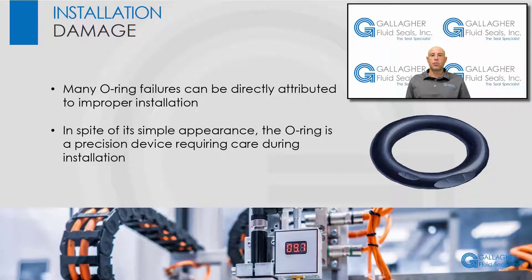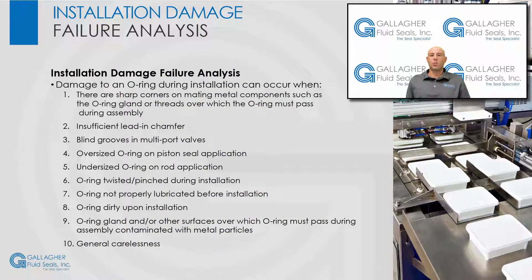Many O-ring failures can be directly attributed to improper installation. Despite its simple appearance, the O-ring is a precision device requiring care during installation. Damage to an O-ring during installation can occur when there are sharp corners on mating metal components such as the O-ring gland or threads over which the O-ring must pass during assembly, insufficient lead-in chamfer, blind grooves in multiport valves, an oversized O-ring on a piston seal application, an undersized O-ring on a rod application, the O-ring is twisted or pinched during installation, the O-ring is not properly lubricated before installation, the O-ring is dirty upon installation, the O-ring gland or other surfaces over which the O-ring must pass during assembly is contaminated with metal particles, or general carelessness.